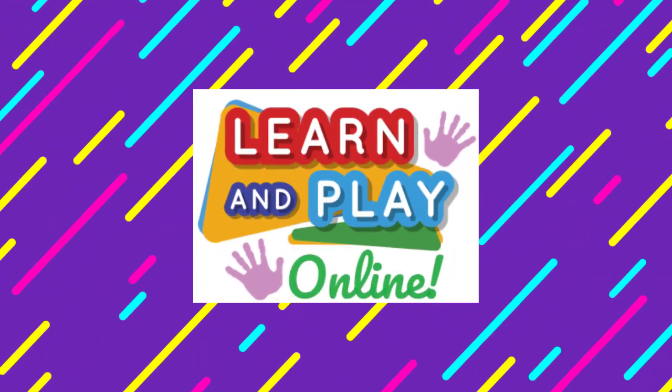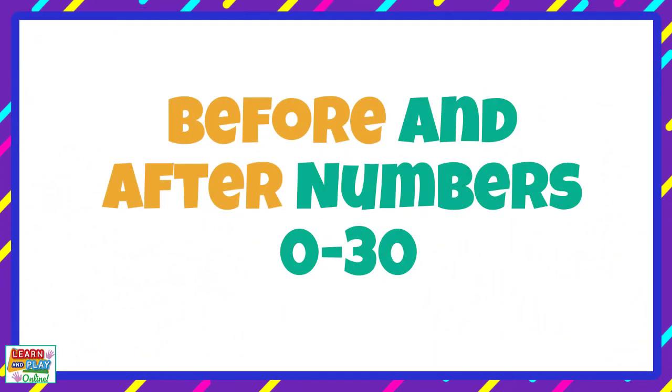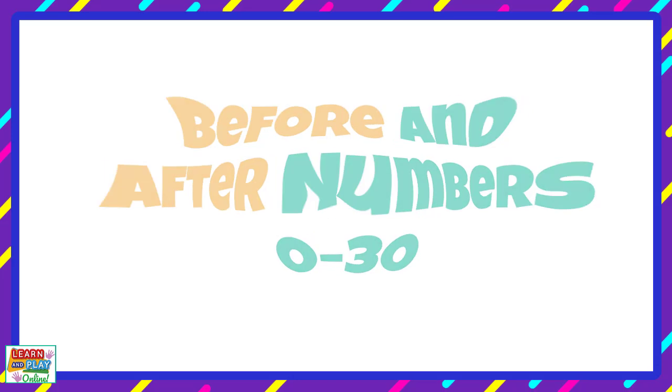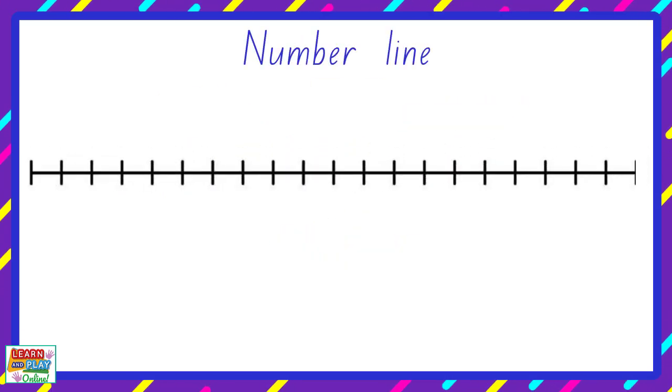Learn and play online. Before and after numbers in the range 0 to 30. This is called a number line. We use it to help us count numbers.